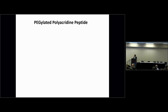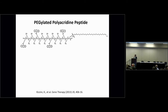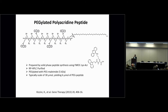Early on, we developed this PEGylated peptide. It's a polylysine peptide with acridine residues attached to lysine side chains, and through a linker on the cysteine, a single 5 kDa PEG. If you develop peptide delivery systems, you want very good control over your chemistry — that's key. We prepare the peptide component by solid phase synthesis using a synthetic molecule in which acridine is attached to the lysine side chain. You have to be able to HPLC purify products, attach PEGs, and it's quite scalable.